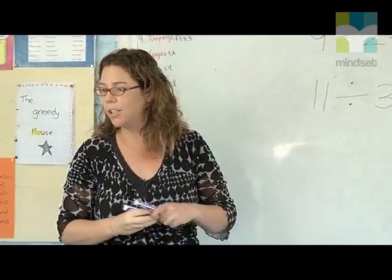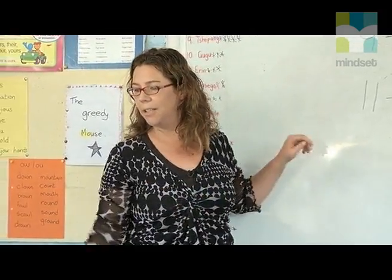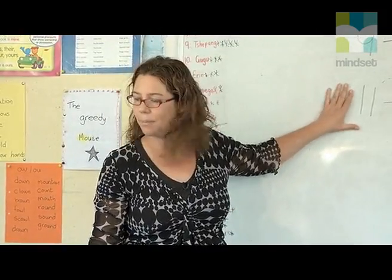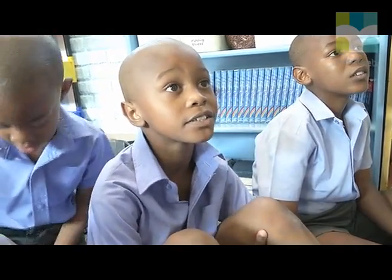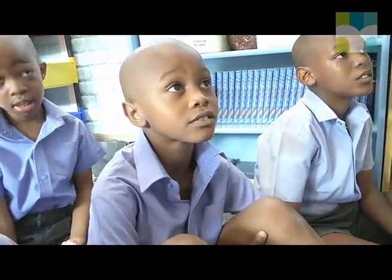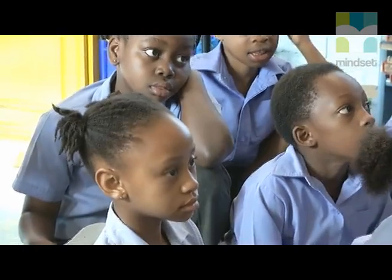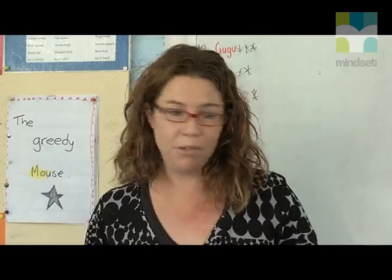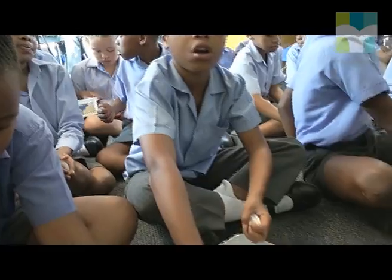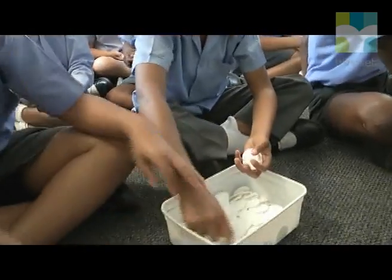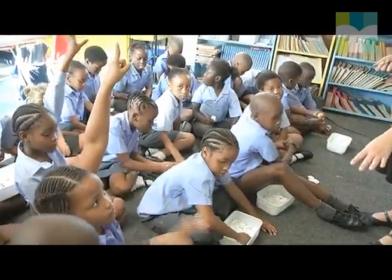We are now going to do... Who would like to read this for me? Suka, would you like to read this for me, please? 11 divided by 3 equals. Right, so take your 11. Remember they need to be in even groups — they have to have an equal number in each group. I want to see your groups.